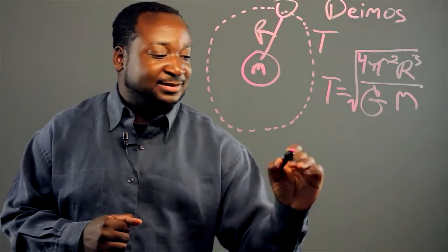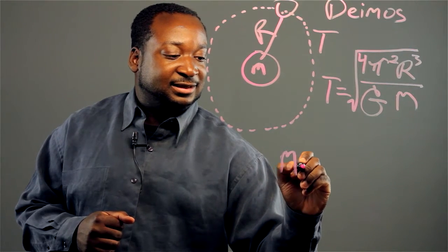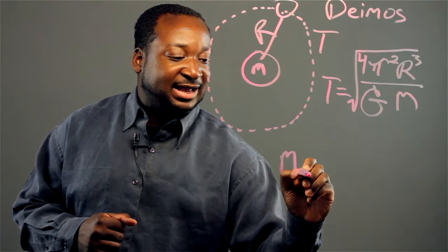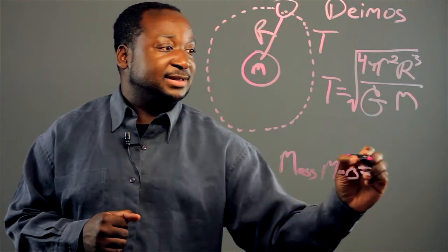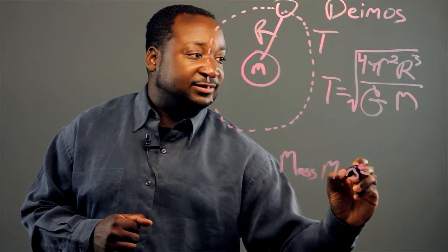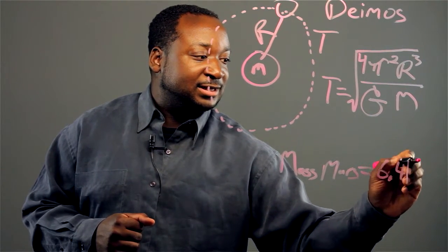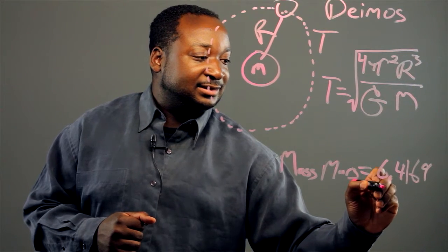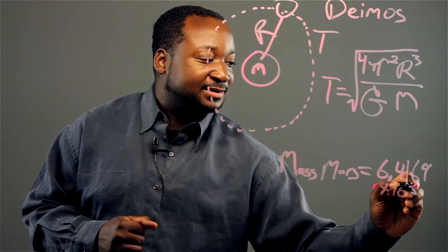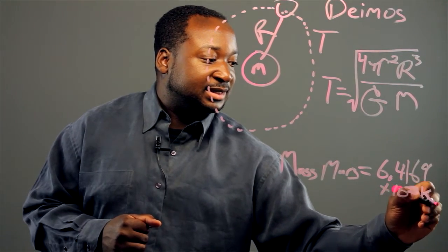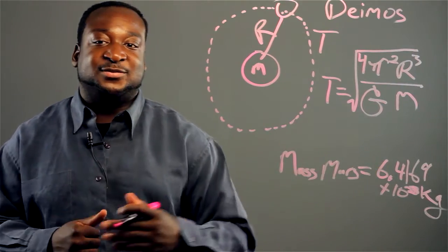And now when we solve, we get M, or the mass of Mars. That's equivalent to, in scientific notation, 6.4169 times 10 to the 23 kilograms. And this is our mass of Mars.